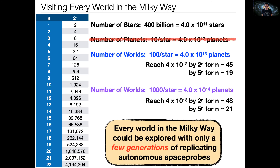Every world in the Milky Way could be explored with only a few generations of replicating autonomous space probes. One concern might be filling the galaxy with space junk, but the amount of resources needed to build five robots and five rockets on any given world is small—certainly not the resource impact we have here on Earth. It would obviously disrupt the local area where it gathers raw materials, but it would not be a planetary-wide catastrophe.